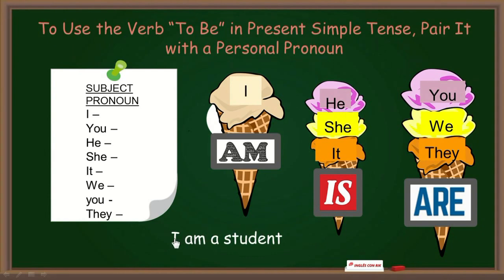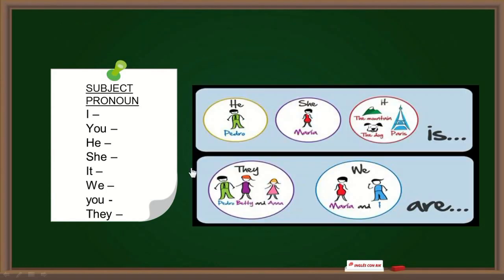Por ejemplo: I am a student — yo soy un estudiante. Requerimos de un complemento para darle más sentido a la oración. No tendría sentido decir solo yo soy — necesitamos un contexto. I am a student. Además, el verbo to be también puede ir con nombres propios o nombres comunes. Por ejemplo, en vez de decir he is, puedo decir Pedro is.